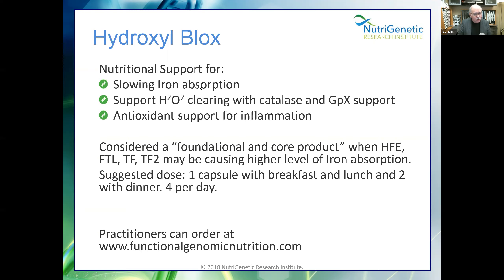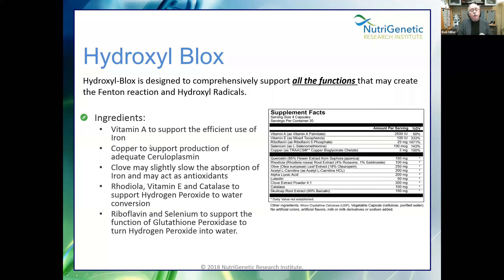The formula supports those who over-absorb iron, slows iron absorption, supports hydrogen peroxide clearing with catalase and glutathione peroxidase, and provides antioxidant support for inflammation. Key ingredients include vitamin A to support efficient iron use, copper to support adequate ceruloplasmin production, clove as one of the strongest antioxidants that also slows iron absorption, rhodiola, vitamin E, catalase to support hydrogen peroxide to water conversion, and riboflavin and selenium to support glutathione peroxidase.